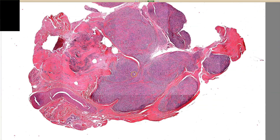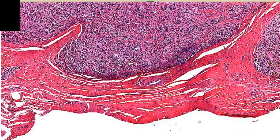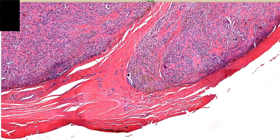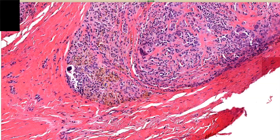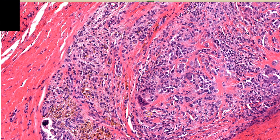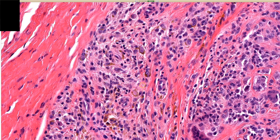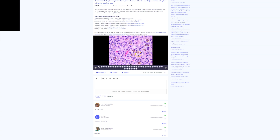Usually there will be foamy histiocytes or xanthoma cells around the outside — I looked for a while in this case and couldn't really find those. There will also usually be hemosiderin present at least focally, sometimes very abundant. Here's hemosiderin, and it has a tendency to do this interesting thing where it makes a halo or ring around the periphery of these tumoral histiocytes. I've got some really good pictures to show you of this.